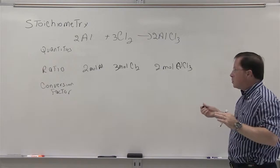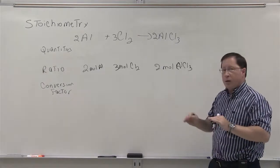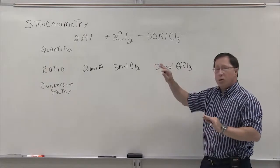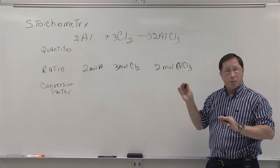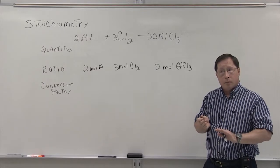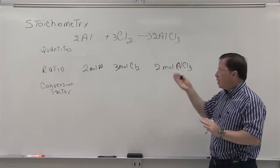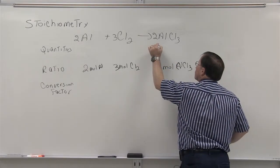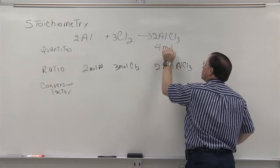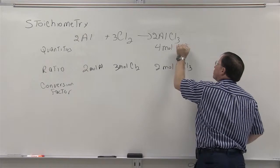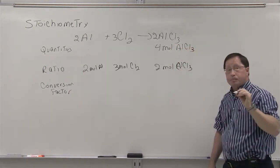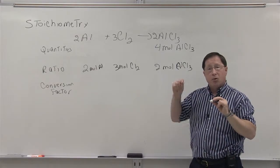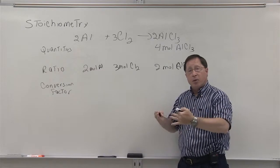Based on these ratios, we can create what are called conversion factors, which are fractions that tell us how we can convert quantities of one thing into another. Based on a value, let's say we want to produce four moles of aluminum chloride.